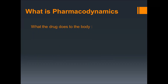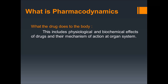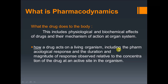Now we will talk about pharmacodynamics — what the drug does to the body. In simple terms, the drug acts on the body. This includes physiological and biochemical effects of drugs and their mechanism of action on organ systems. It covers the pharmacological response, and the duration and magnitude of response observed relative to the concentration of the drug at an active site in the organism.